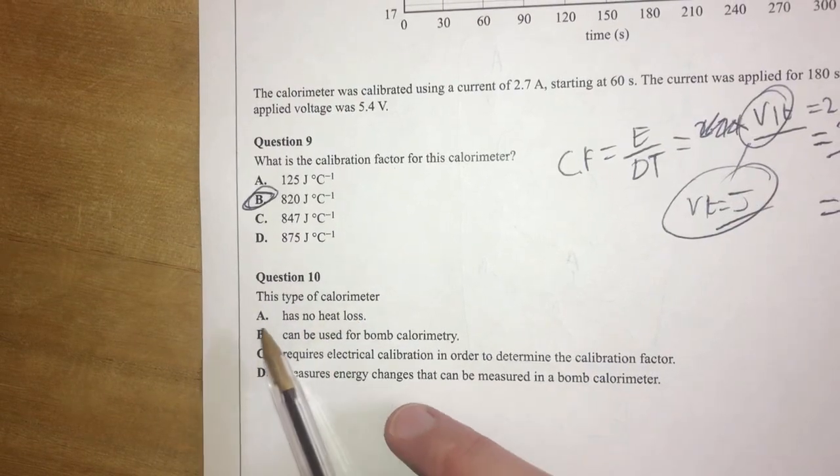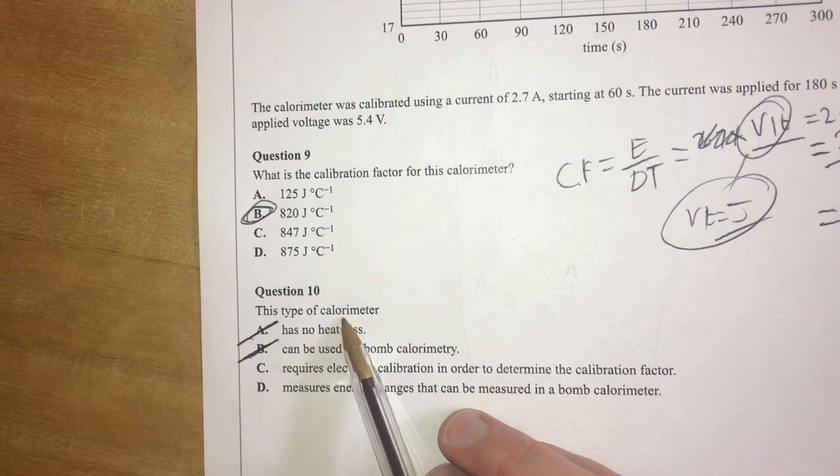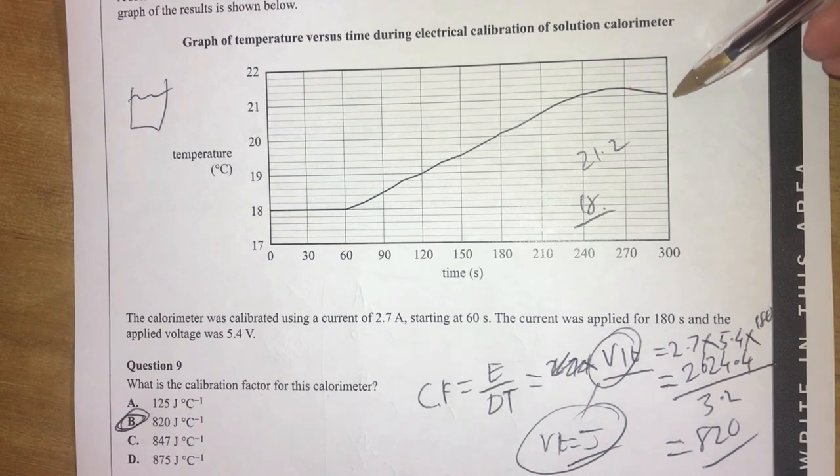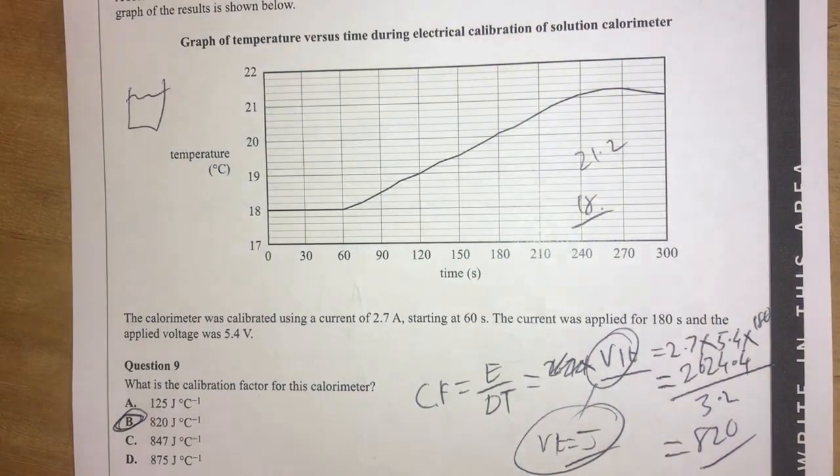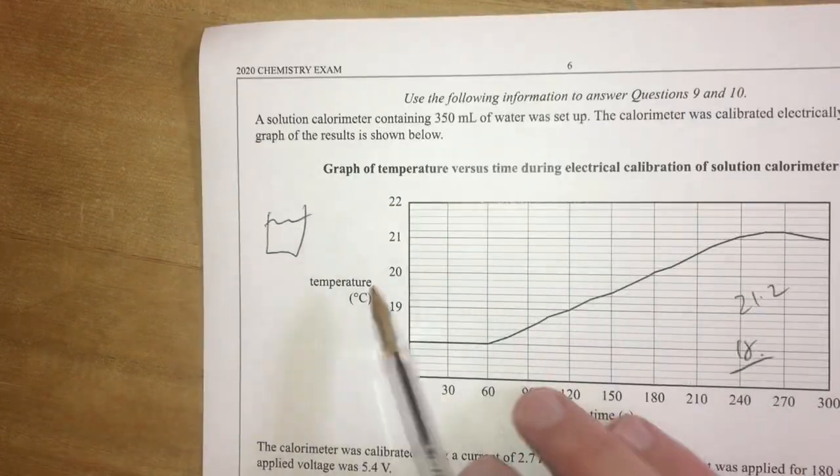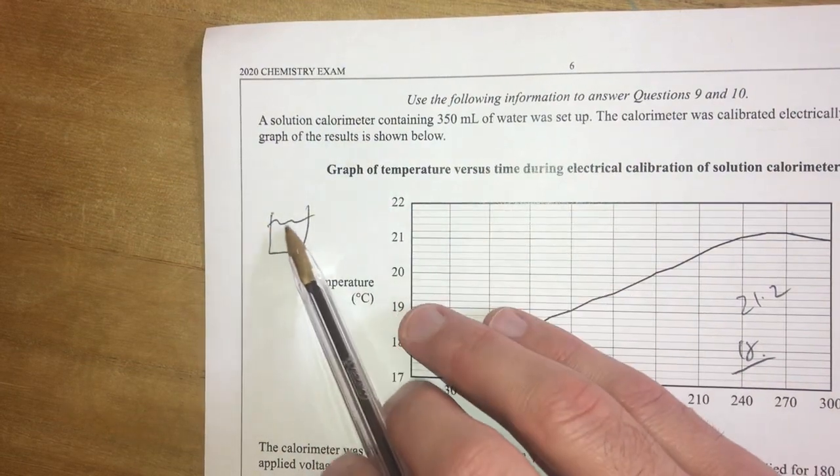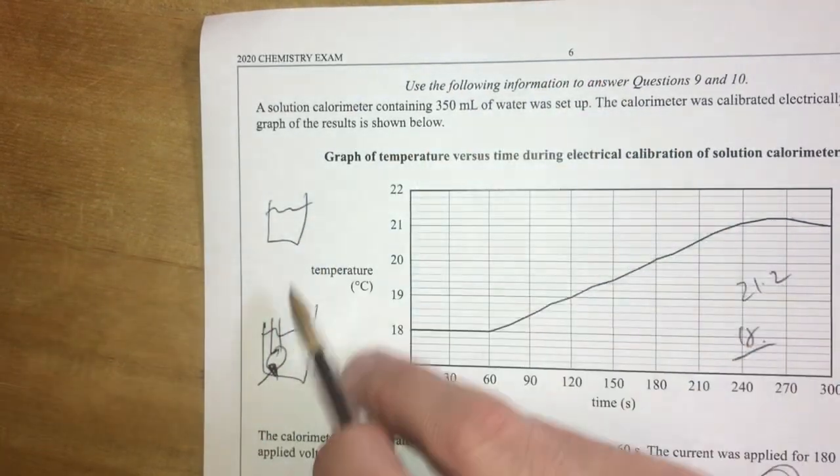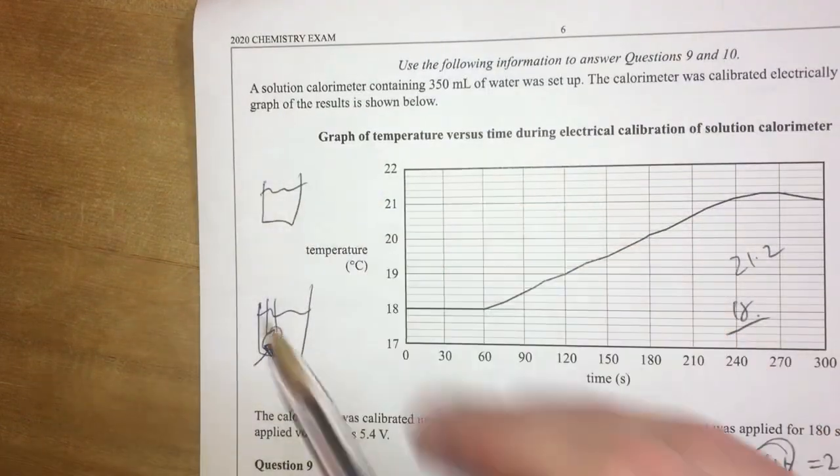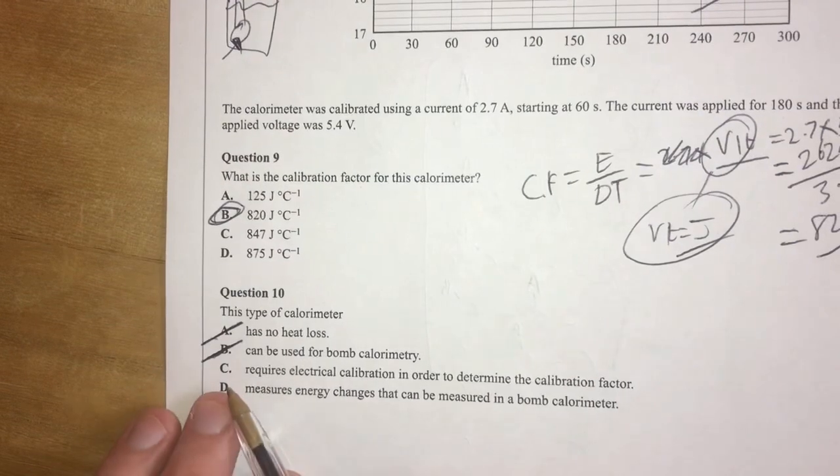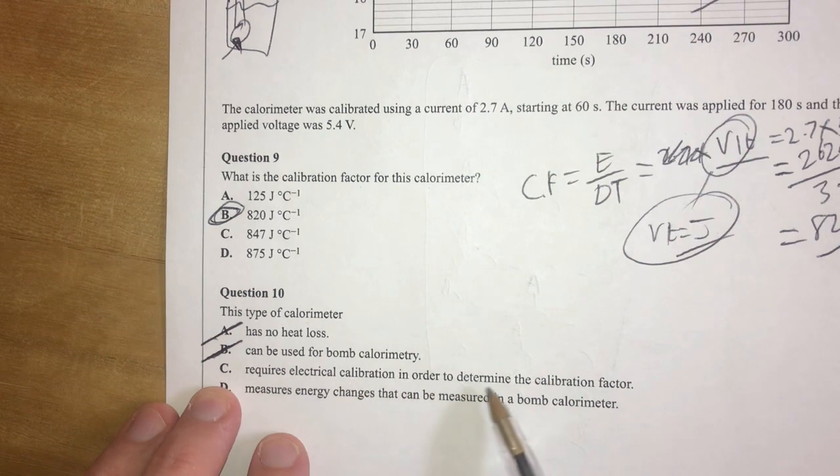Question 10, this type of calorimeter has, I'm back again, this type of calorimeter. Well, I've taken out, it has no heat loss because I can see the heat loss here. I can see the fact that the temperature is starting to go down again, which suggests it's cooling down. So therefore, heat is getting lost from the actual thing itself. It can be used for bomb calorimetries. And I've said no to that one as well, because I read through it again, and it said it's a solution calorimeter. It's basically a glorified beaker. A bomb calorimeter needs to have a combustion chamber in it. So therefore, you cannot combust something in a solution calorimeter. It just doesn't work. This is for reactions of solutions, like acid-base reactions or dissolution reactions, where you're dissolving something and looking for temperature change.